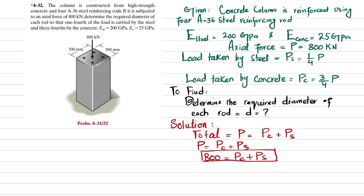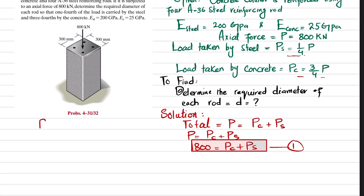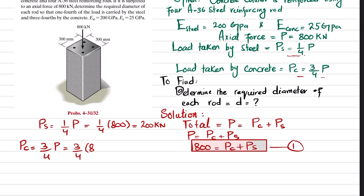The total load P equals load taken by concrete plus load taken by steel. Load taken by steel: Ps = (1/4) × 800 = 200 kN. Load taken by concrete: Pc = (3/4) × 800 = 600 kN.